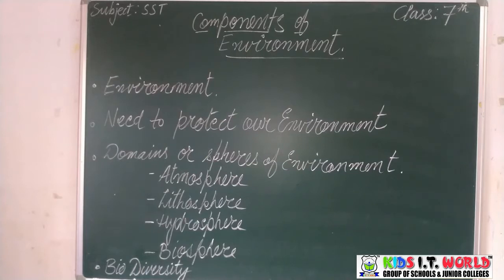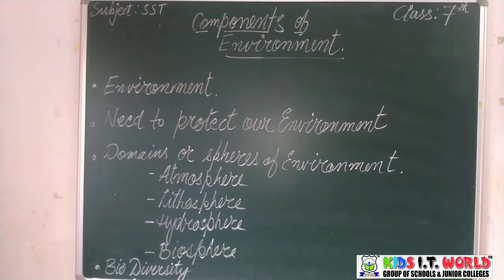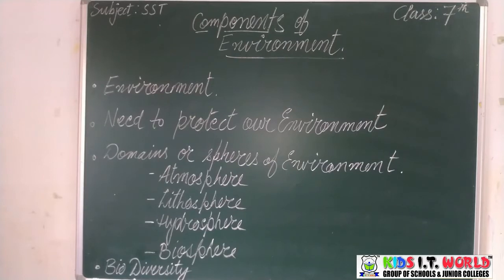Natural environment has basically two components: abiotic and biotic. Abiotic means non-living and biotic means living. Abiotic components include elements like sunlight, air, water, soil, moisture, etc. Biotic components include plants and animals.